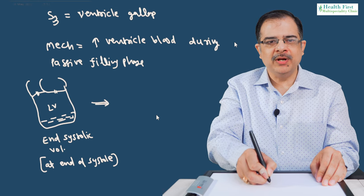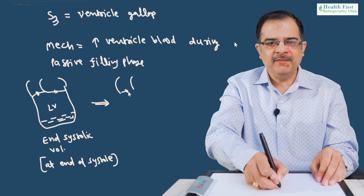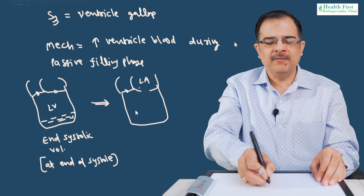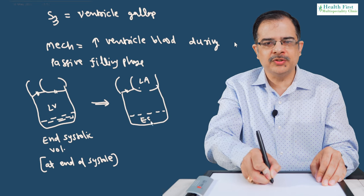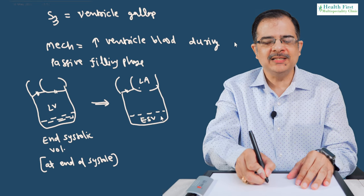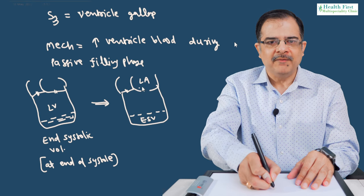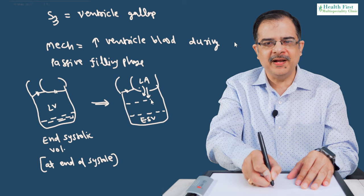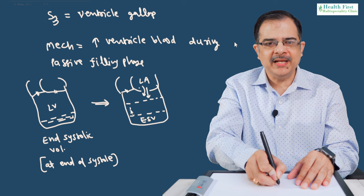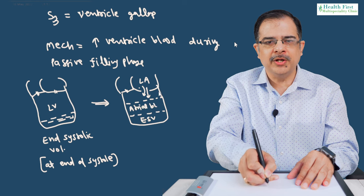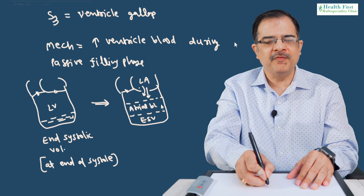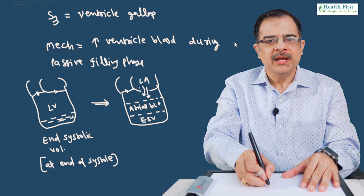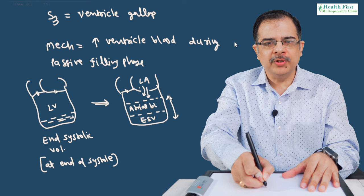Subsequently, the AV valve — the mitral valve on the left side — will open. The blood already present is the end systolic volume, taken as 30 ml in this example. During the passive filling phase, blood from the atria will also come into the ventricle. We call this atrial blood. Suppose this atrial blood is 50 ml, so the total quantity during the passive filling phase becomes 80 ml.